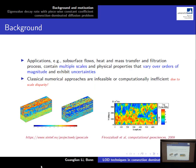In many applications the physical properties can vary several orders of magnitude, and some even exhibit this uncertainty. Applications include reservoir simulation, material science, and heat and mass transfer filtration processes. For those applications the classical numerical approaches are very expensive and infeasible, which gives rise to multi-scale methods.